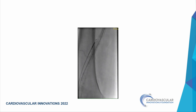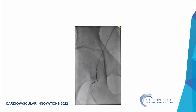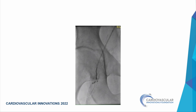We pulled the antegrade balloon and pushed the wire retrograde, trying to externalize it. By this point we were three hours into the procedure. My fellow suggested stopping, but we had just crossed. We used a 7 mm snare to externalize the wire, exchanged to a Platinum Plus wire, and proceeded with the intervention.